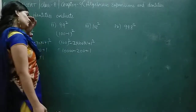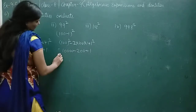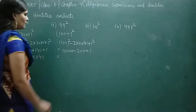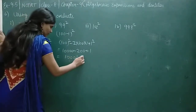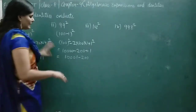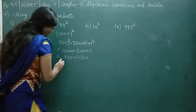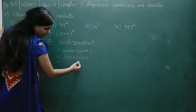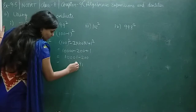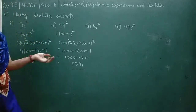So 99² = 10000 - 200 + 1. First do the addition part: 10000 + 1 = 10001. Then subtract 200: 10001 - 200. Subtract digit by digit: 1-0=1, 10-0=9, 9-2=7, and it is 9. So the answer is 9801.